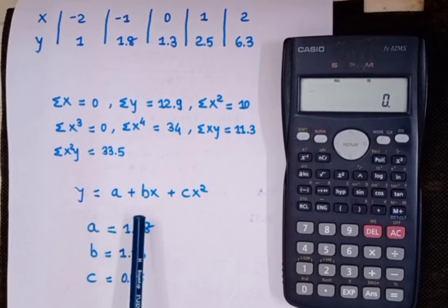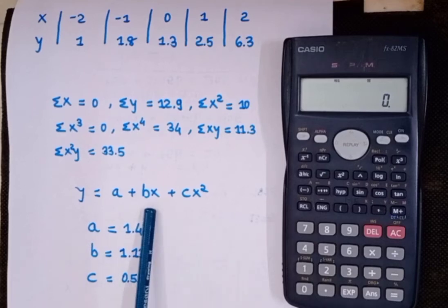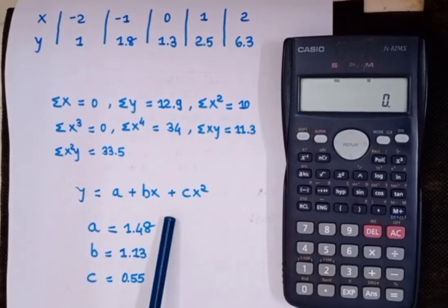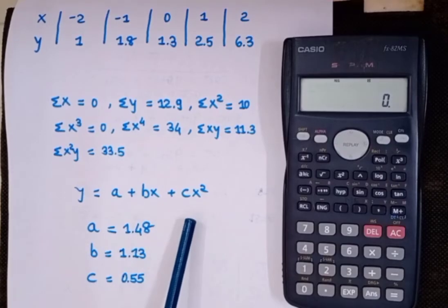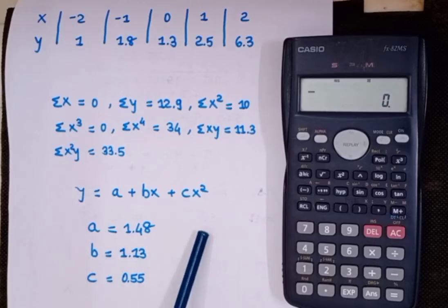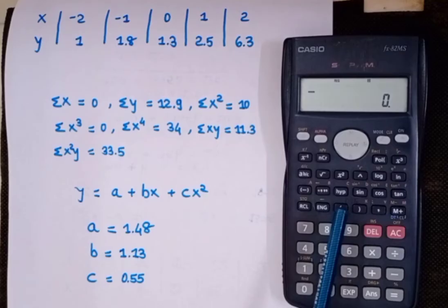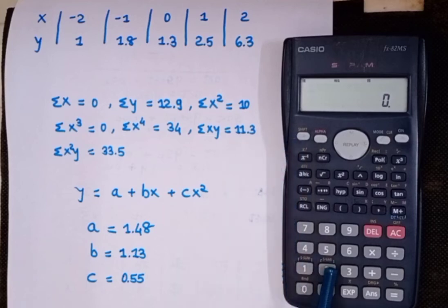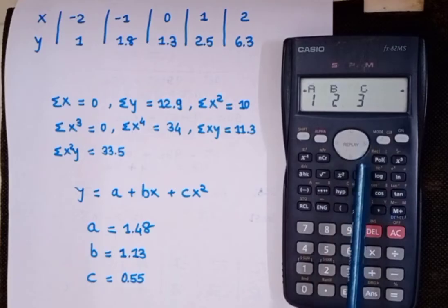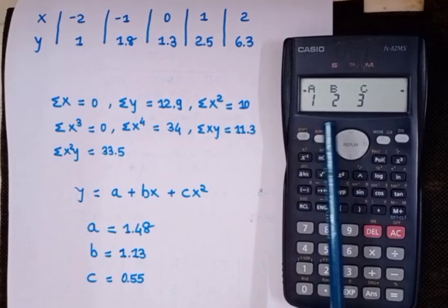The equation of the parabola to be fitted is y = a + bx + cx². We can find a, b, and c on the calculator. To do so, press Shift then S-var (press 2), then press next two times — you can see a, b, and c.